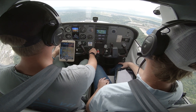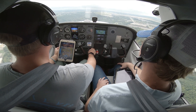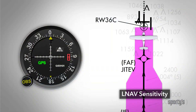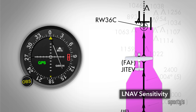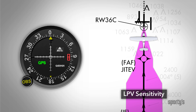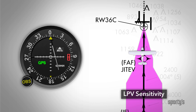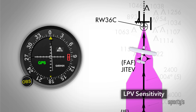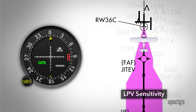Knowing what type of approach you'll be flying also makes it easier to fly a smooth approach. LNAV approaches have a fixed sensitivity from the final approach fix to the missed approach point, so a two-dot deflection at one mile is the same lateral deviation as a two-dot deflection at five miles. On the other hand, an LPV approach's angular approach course means a two-dot deflection at one mile is much less than a two-dot deflection at five miles. Far from the runway, deviations call for larger heading corrections, while close to the runway, smaller corrections are required.